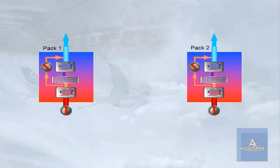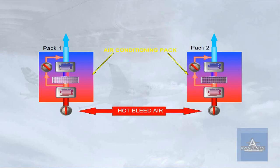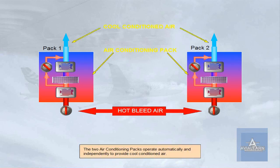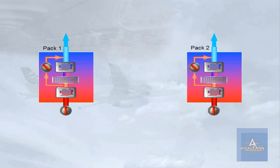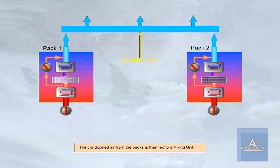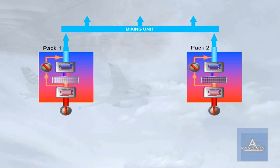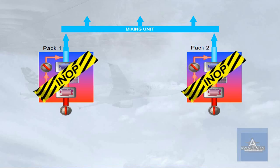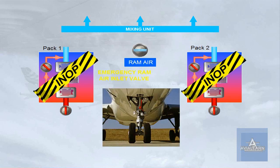The two air-conditioning packs operate automatically and independently to provide cool conditioned air. The conditioned air from the packs is then fed to a mixing unit. In case of failure of both packs, ram air is provided via an emergency ram air valve. We will look at the use of ram air in the failure cases module.